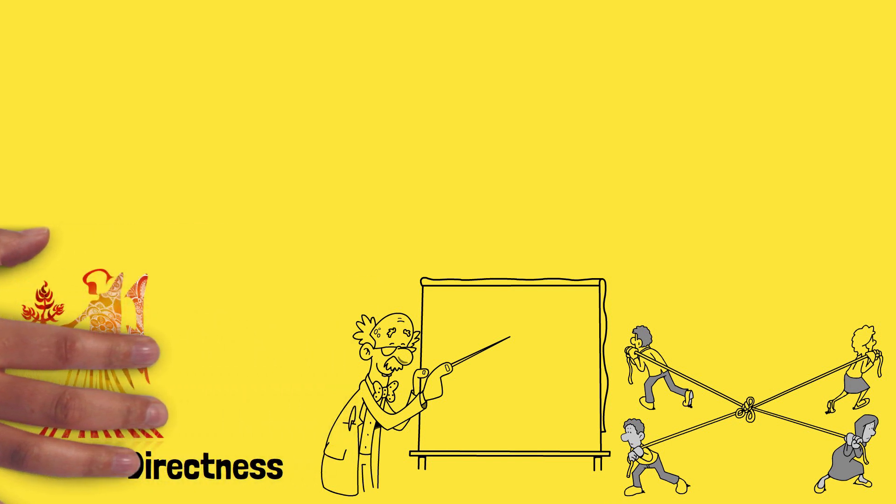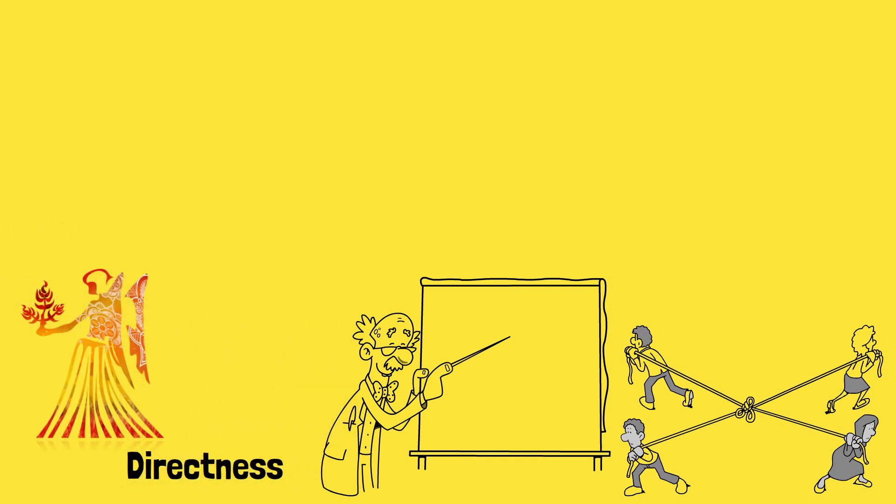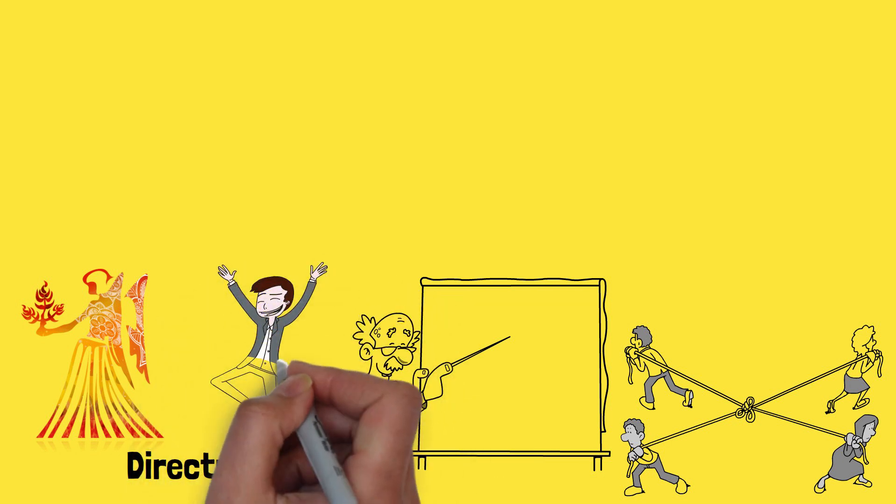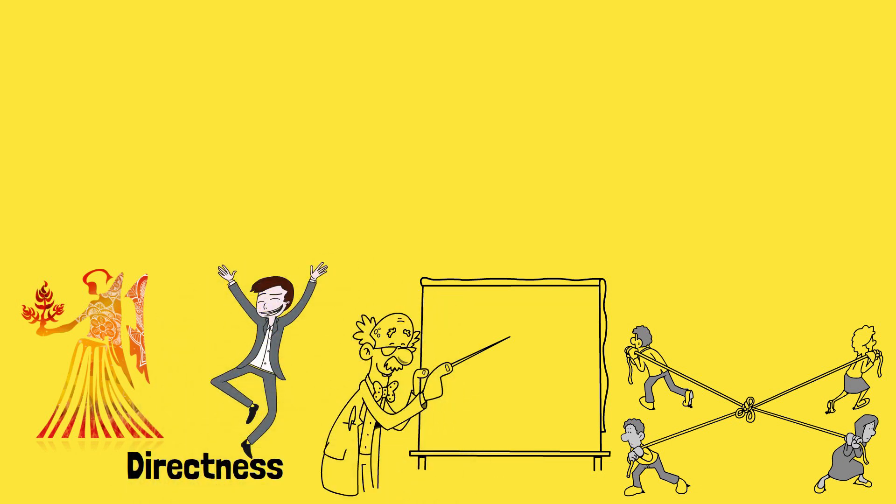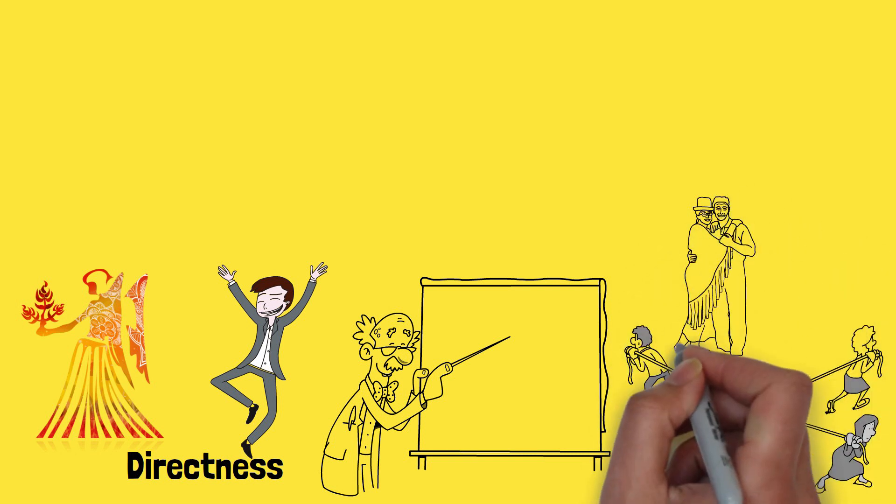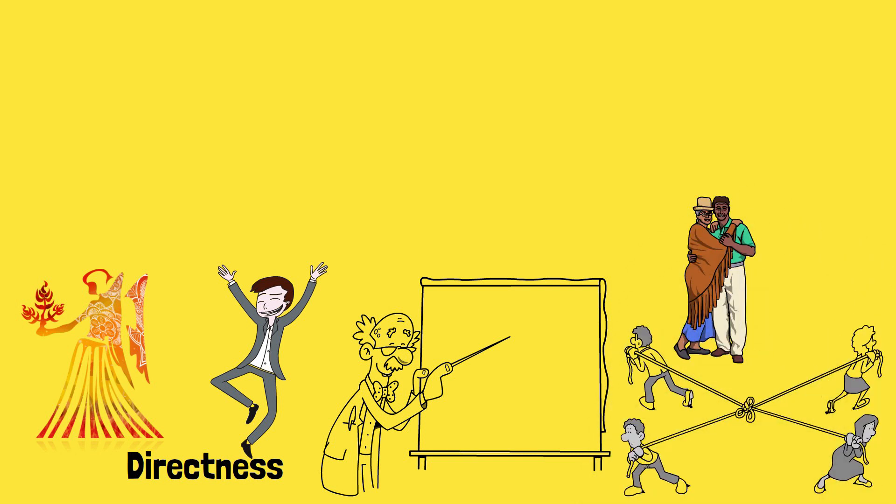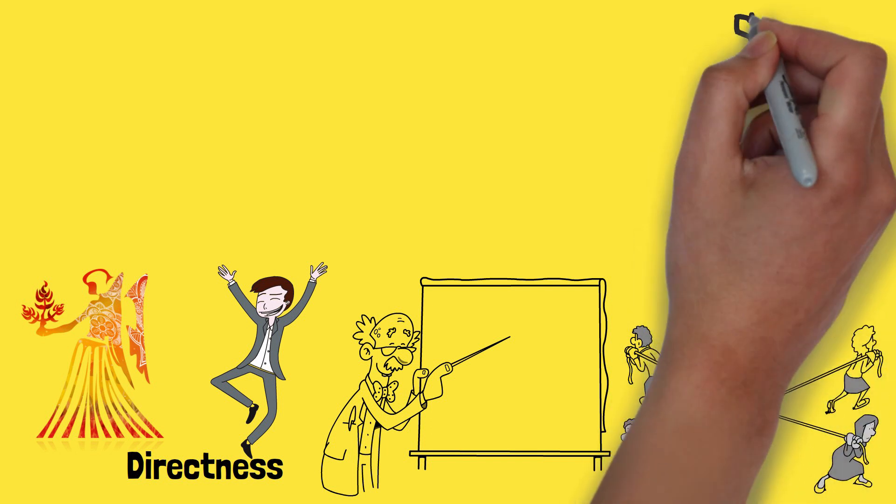By embracing patience, open communication, and finding a balance between spontaneity and practicality, this duo can create a harmonious bond that combines passion and stability. They just need to remember that a little bit of organized chaos can be quite entertaining.